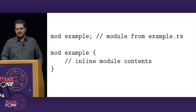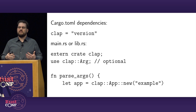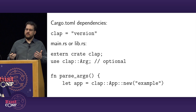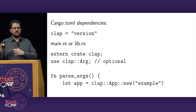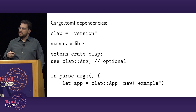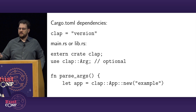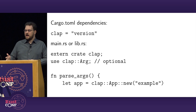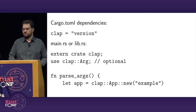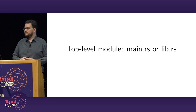Here's what normal use of Rust dependencies looks like, using the command-line argument parser clap. In cargo.toml you declare the dependency version; it gets pulled in automatically by cargo. Then somewhere in your main program you say 'extern crate clap;' and use pieces of it — you can reference 'clap::App' or just 'Arg' after saying 'use clap::Arg;'. This is the 2015 module system working in the top-level module, main.rs or lib.rs. Most crates start with just one module and everything works nice and simple.